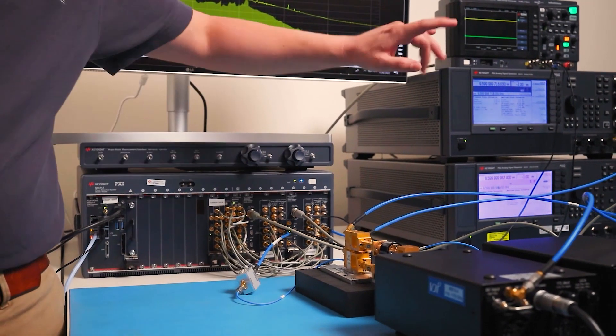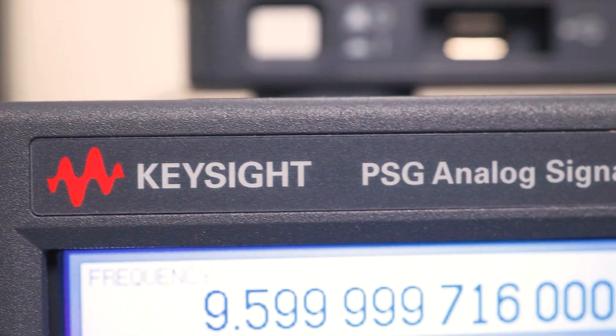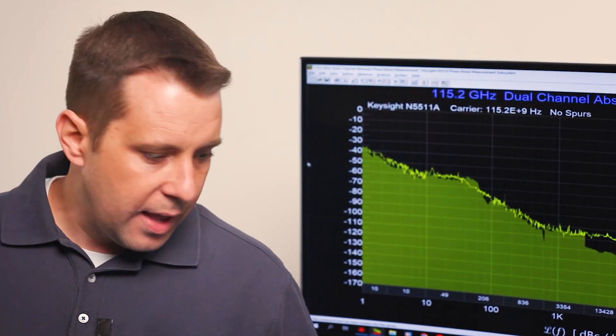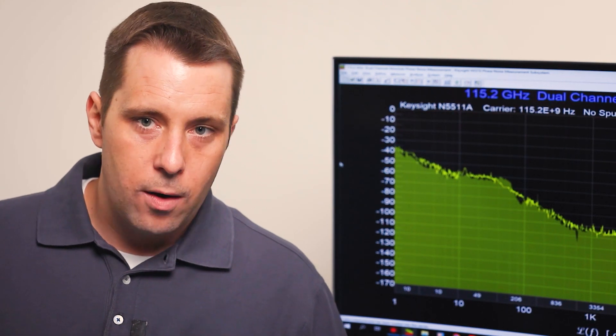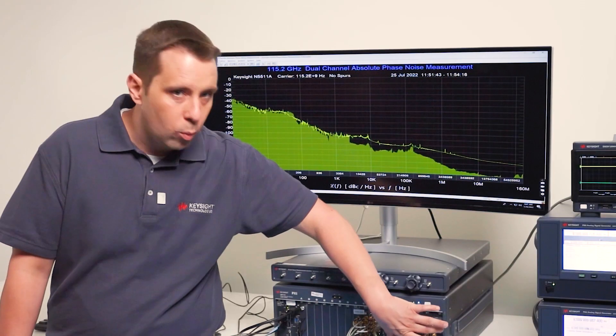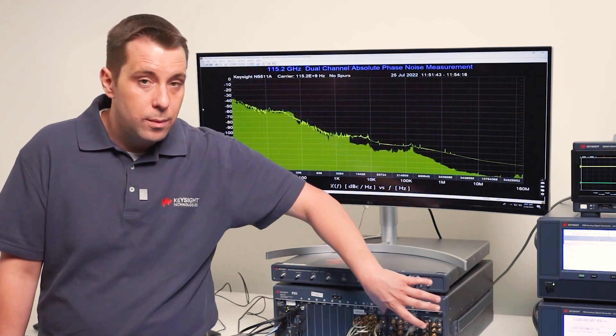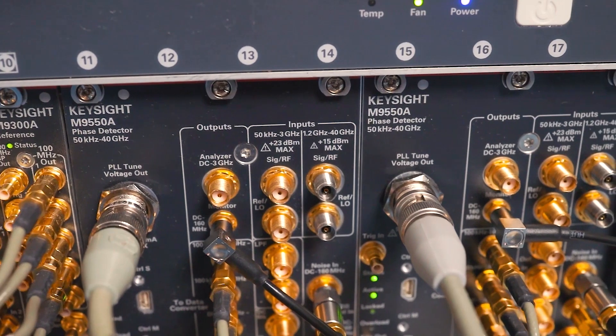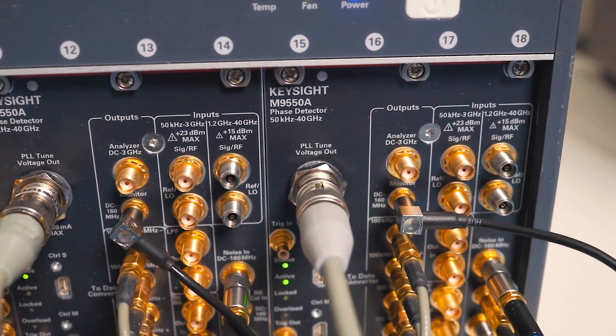Those are being driven by PSG signal generators into the LO inputs and the IF is at baseband. The nice thing is we've suppressed the carrier in this phase detection process. We go into the system which provides 56 dB of baseband gain and we have the maximum initial dynamic range at that point.